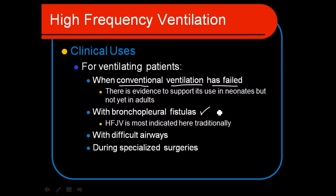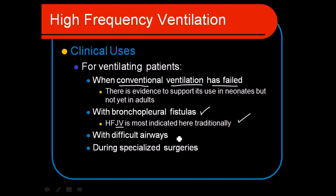A bronchopleural fistula is where we have an opening from the chest cavity and we're losing a lot of air through there. That's where high-frequency jet ventilation can be quite advantageous, because even if there is a large gaping chest wound with air leaking out, or we have multiple chest tubes with lots of air leaking out of the chest, we can still adequately ventilate our patients. Sometimes when we've got very difficult airways — flaccid tracheas, cartilage problems, or even large cancers — we can ventilate around these problems with high-frequency oscillation or jet ventilators.